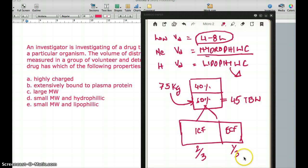So the extracellular fluid is 45 divided by 3, and the intracellular fluid is 45 times 2 divided by 3. When we compute this, we see that the ICF is about 30 liters and the ECF is about 15 liters.